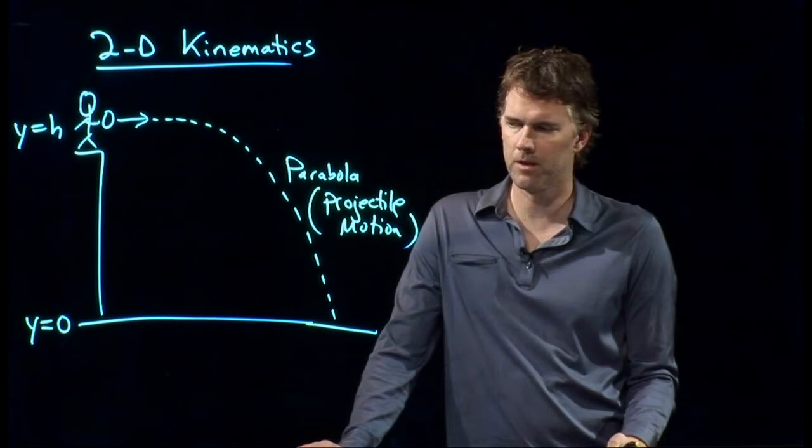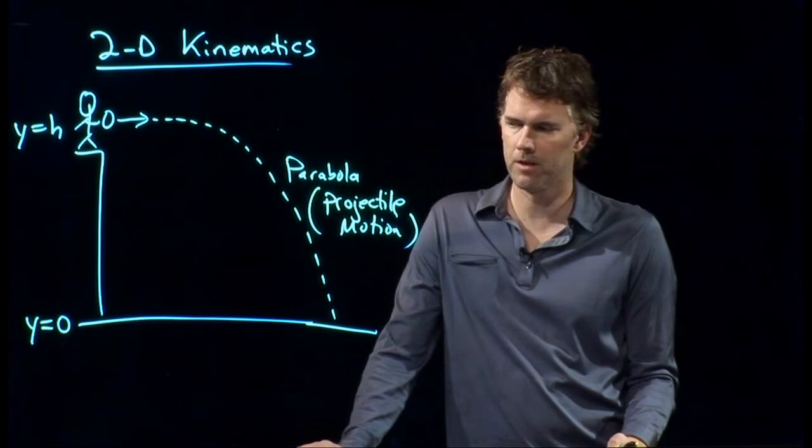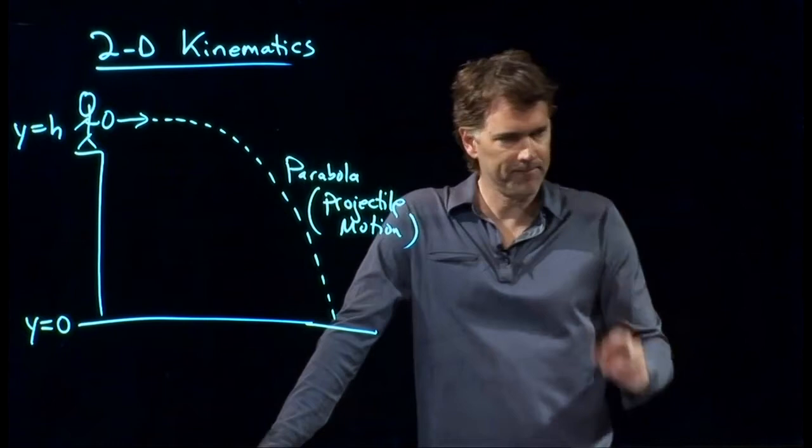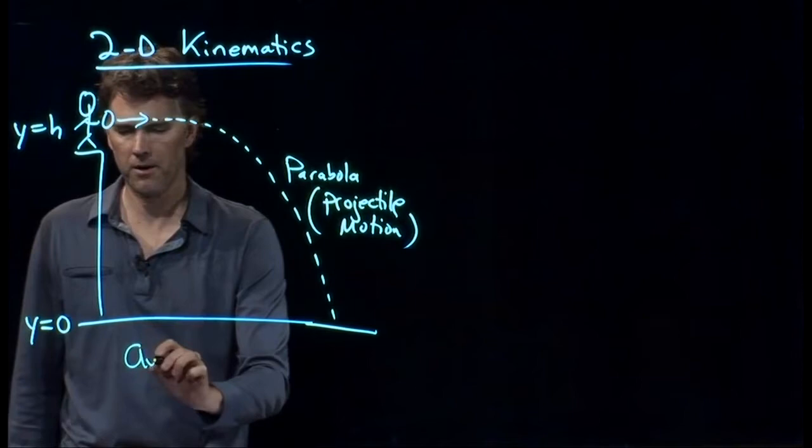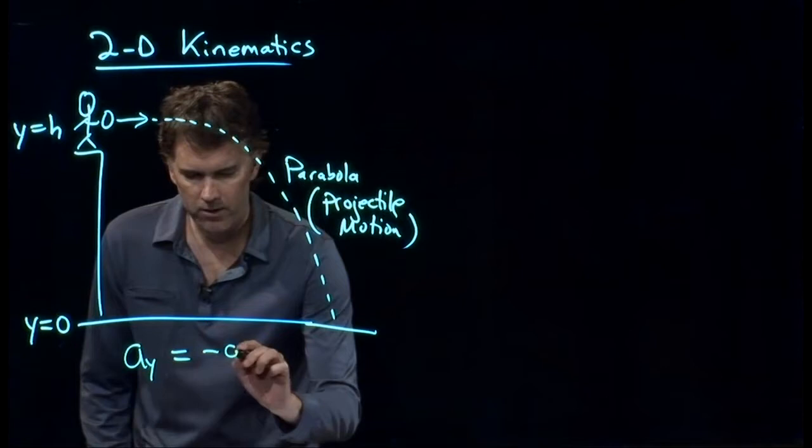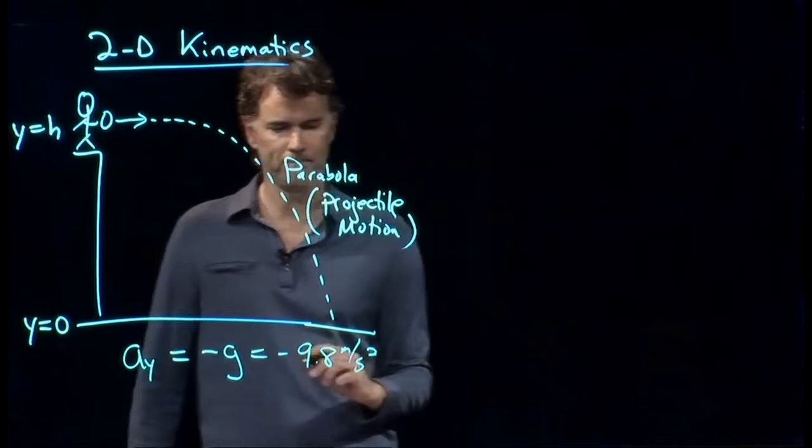Alright. Now what do we do? Well, let's think about this motion for a second. First off, why is it curving down? What is dragging this thing down towards the Earth? Yeah. Gravity. Gravity. Gravity is, of course, pulling it down towards the Earth. No gravity. This thing just keeps going on forever and ever. And so gravity is really important here. And in fact, the acceleration due to gravity, we know it is negative g, which is negative 9.8 meters per second squared.